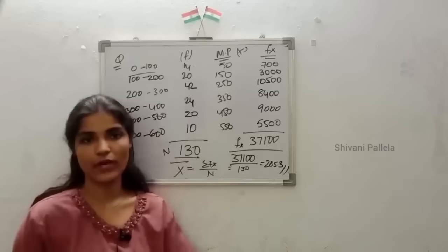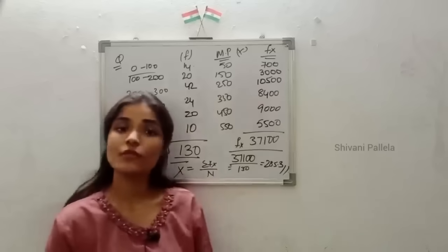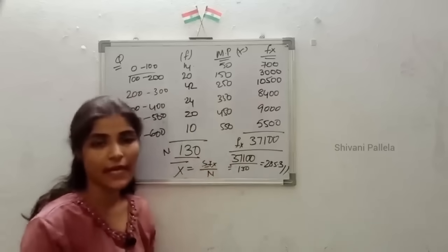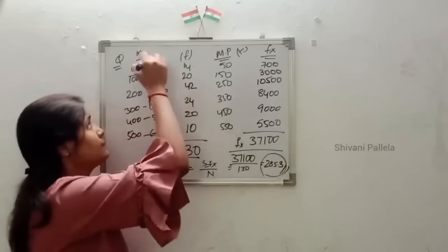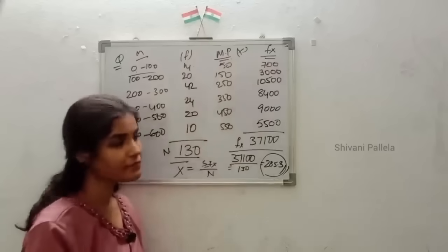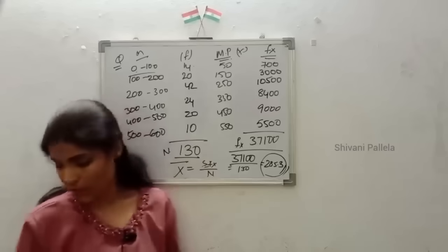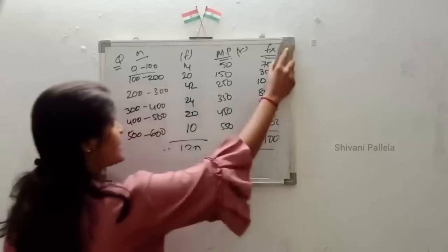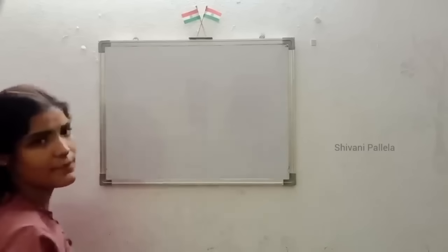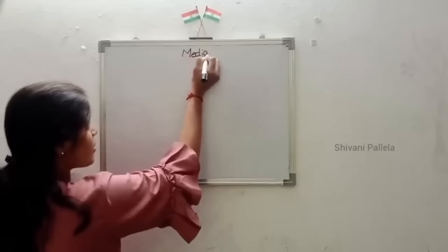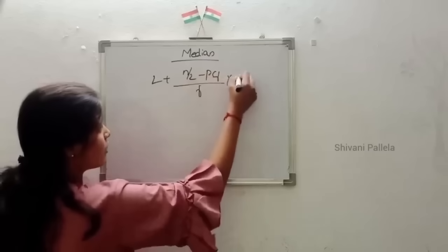If they give arithmetic mean data in this long format, you need to use the direct method. Calculate arithmetic mean using direct method means like this you need to do: marks column, frequency, midpoints, and fx. This is about the arithmetic mean. Now we will discuss about the median, which is most important and easy. What is the formula of median? L plus (n by 2 minus PCF) by f, into i.